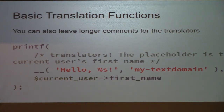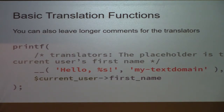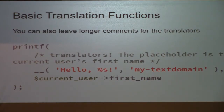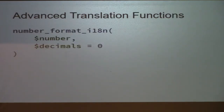If you need to provide a larger description, you can also add comments before the translation function. If you use the word 'translators' with a colon, whatever comment follows will show up in the translation template for translators to use. For example, if you have 'Hello %s', some languages will treat that very differently depending on whether it's 'Hello, John' versus 'Hello, Miami.' You'd want to add a comment saying this is a formal name — specifically the user's first name — just in case that helps the translator.